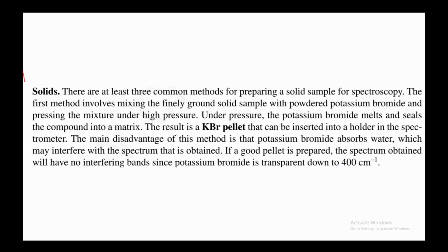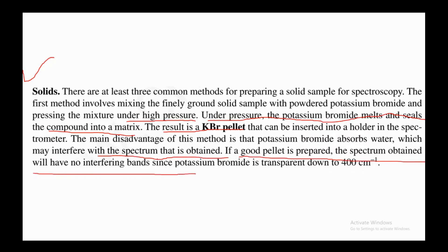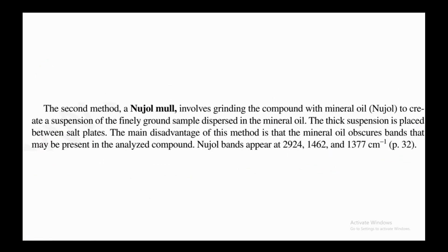For solid samples, there are three common preparation methods. The first involves mixing the finely ground solid sample with powdered potassium bromide and pressing the mixture under high pressure; the KBr melts and seals the compound into a matrix, resulting in a KBr pellet that can be inserted into a holder in the spectrometer. The main disadvantage is that KBr absorbs water, which may interfere with the spectrum. If a good pellet is prepared, no interfering bands result since KBr is transparent down to 400 cm⁻¹.